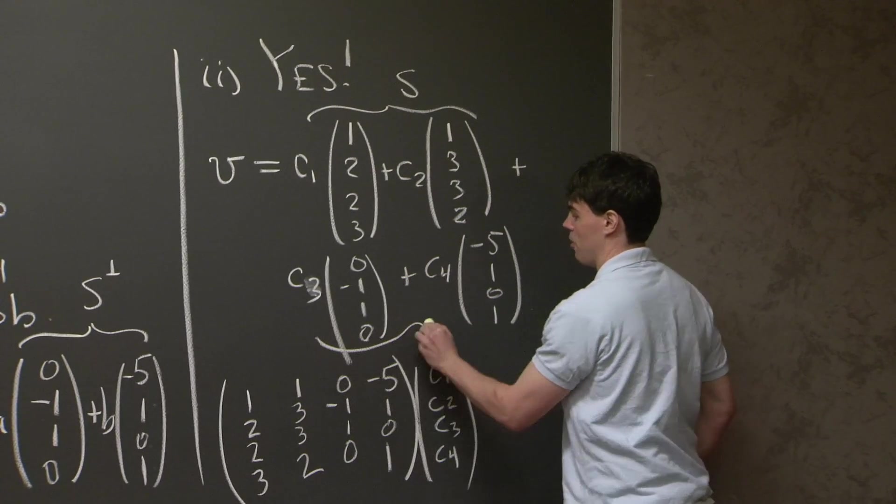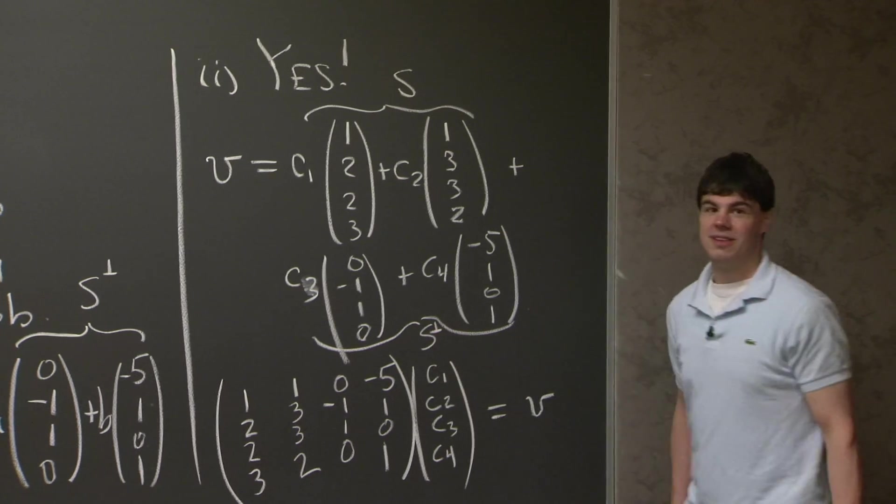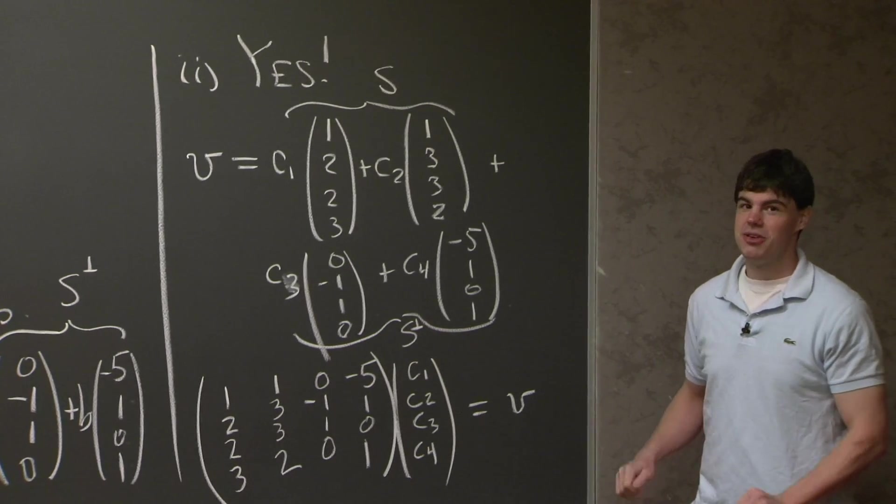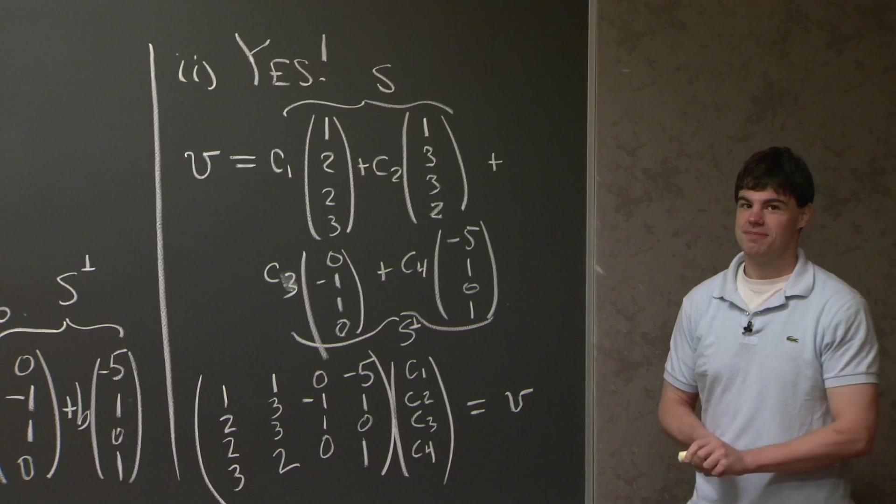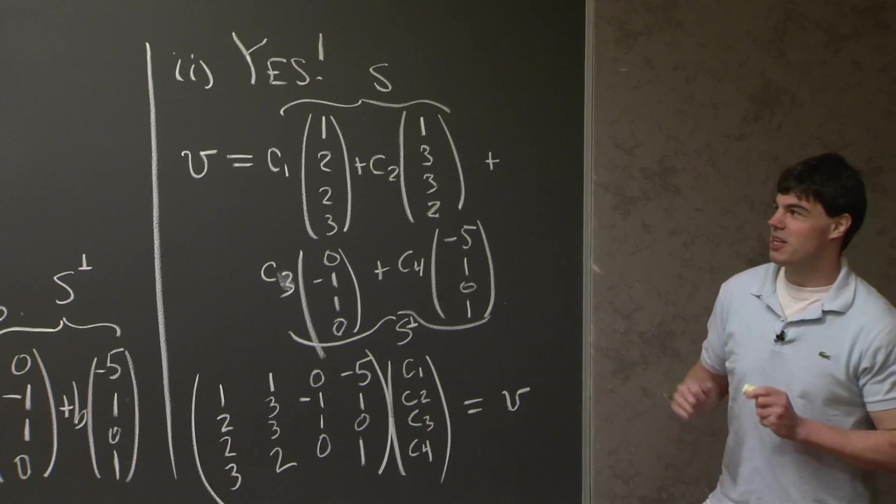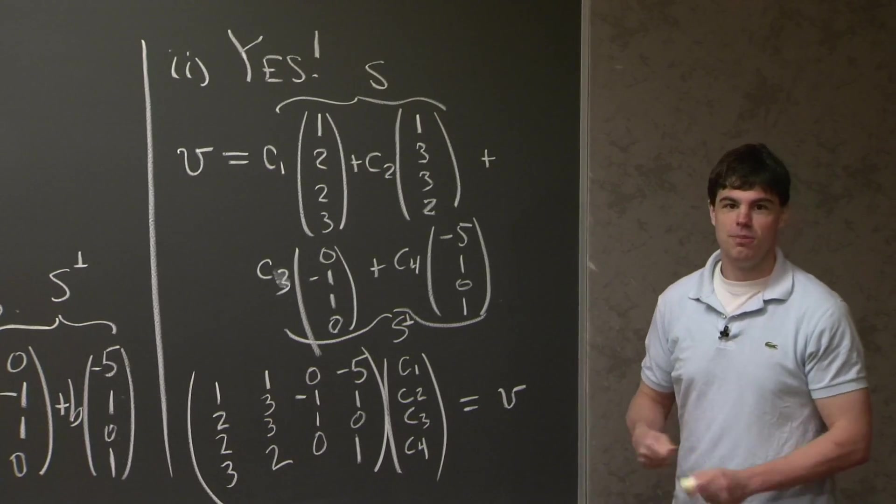This then gives us a unique decomposition for v in terms of a piece which is in S and a piece which is in S perp. And in general, this can be done for any vector space. Well, I'd like to conclude this problem now, and I hope you had a good time.